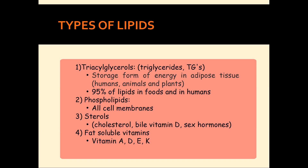Phospholipids make up all your cell membranes. You might wonder — do we actually eat phospholipids? When you eat a piece of meat, you're eating muscle cells with cell membranes. Even if you're eating plant-based foods like apples, broccoli, or lettuce, you're eating plant cell membranes. Plants have a cell wall on the outside and a cell membrane on the inside, so even with plants, you're eating phospholipids.